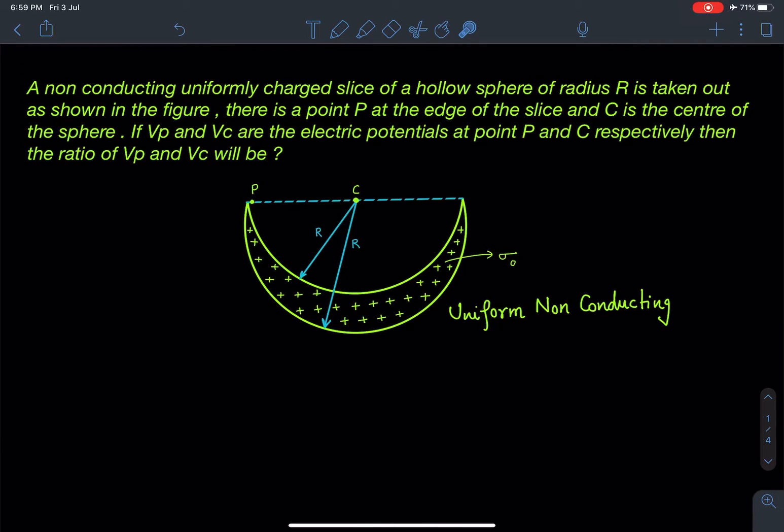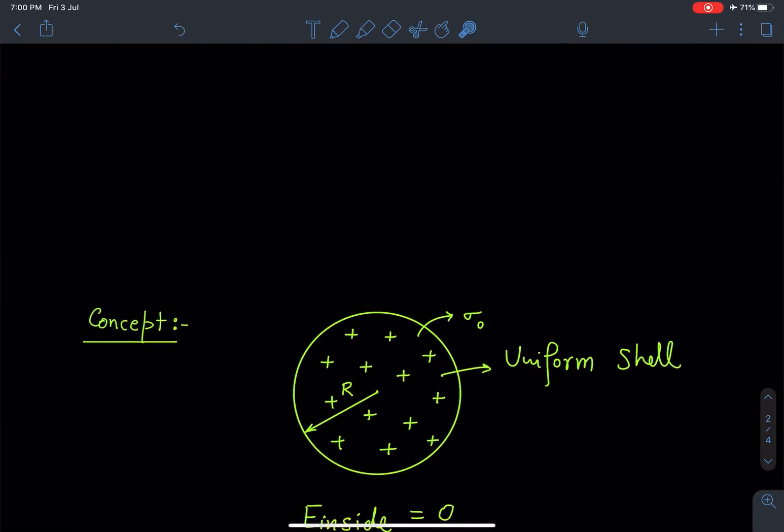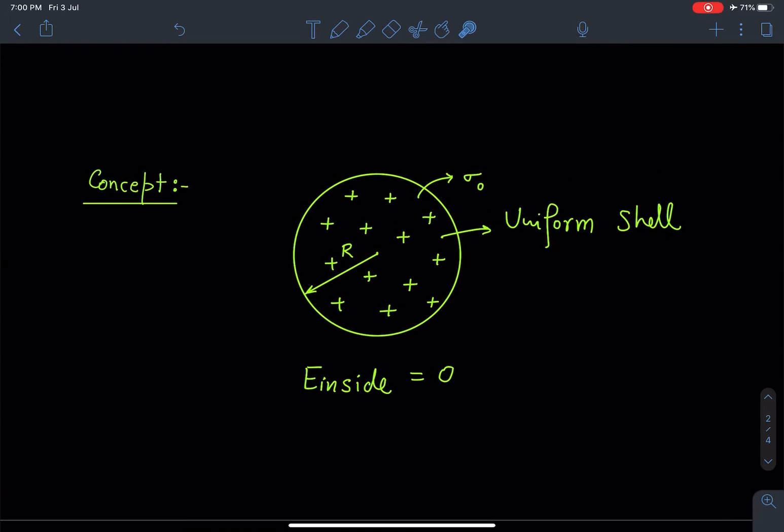The concept part of this problem is, since it is part of a hollow sphere, somewhere the idea will be behind this problem we will derive from hollow sphere only. As we know, in case of a uniformly distributed charge on a hollow sphere, the field inside is going to be zero if it is uniformly charged. We'll be keeping this idea in mind and we are going to solve this problem.